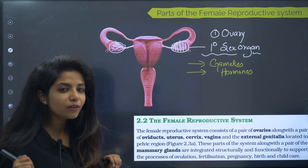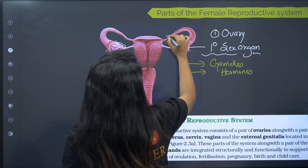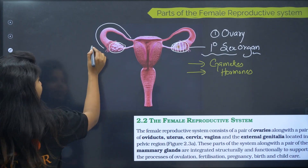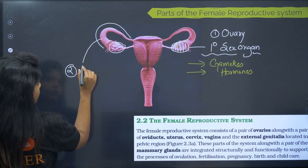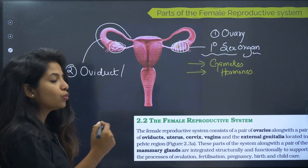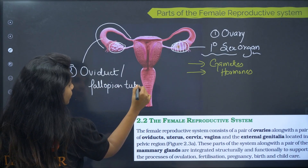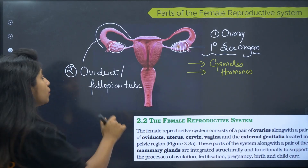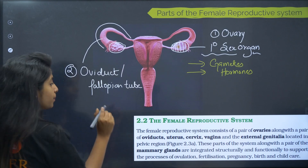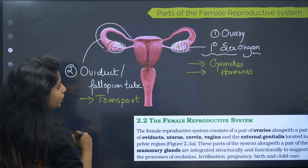The egg is released by the ovary. Now who is responsible for carrying the egg? It is the oviduct. The oviduct extends from the ovary to the uterus, and it is also known as the fallopian tube. The function of the oviduct or fallopian tube is to transport the gametes that are being produced by the ovary — transport is the keyword here.